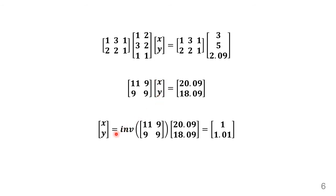Rearranging, we solve x = (AᵀA)⁻¹·Aᵀb, and we get x = 1, y = 1.01.